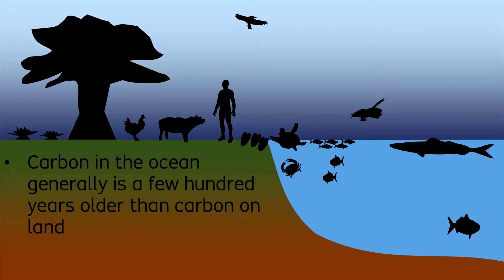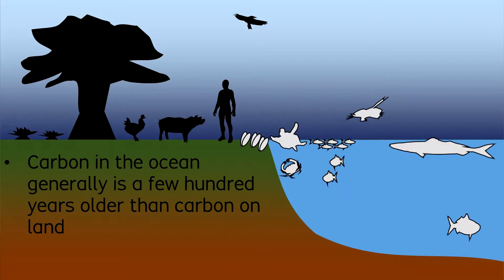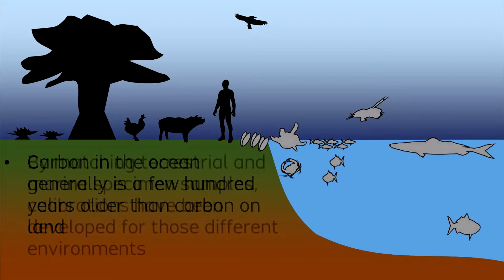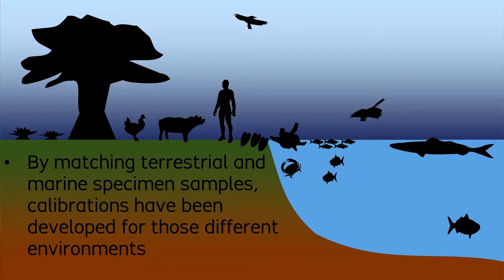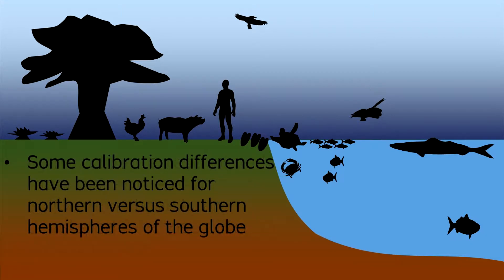Another critical point is to identify the source of the carbon as coming from the land or from the ocean. In the world's oceans, carbon generally is a few hundred years older than on land, and this difference requires separate radiocarbon calibrations for marine versus terrestrial sample materials. By matching two different sample materials, such as a piece of burned wood matched with a piece of marine shell from the same context, the two results together allow refinement of the terrestrial versus marine calibrations. Additional minor calibration differences have been noticed for specific taxa or organisms, as well as between the northern and southern hemispheres.